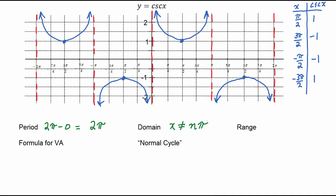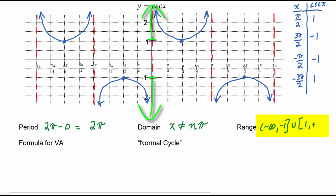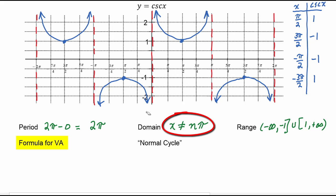For the range, we see this is going to be exactly like it was for secant — where the values go from negative infinity up to negative one, and then from negative one they jump up to positive one and then go on forever, so positive one to infinity. The formula for the vertical asymptotes we get for free from the domain, because every x value we have to exclude from the domain is a vertical asymptote. So the formula for vertical asymptotes is that x equals n pi.